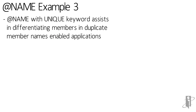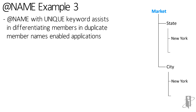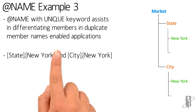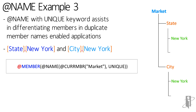For our third example, the NAME function can be used with the UNIQUE keyword to assist in differentiating members in duplicate member names outlines. We have a Market dimension with State and City members. New York State and New York City are both in the outline. The qualified member names for the New York members are State.NewYork and City.NewYork. For the Market dimension members to be calculated correctly, we would need to use the NAME function passing in the name of the current member of Market with the UNIQUE keyword.